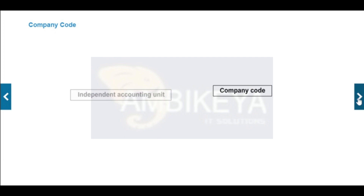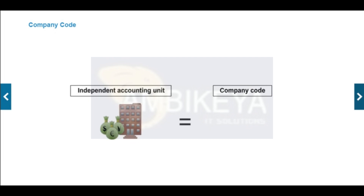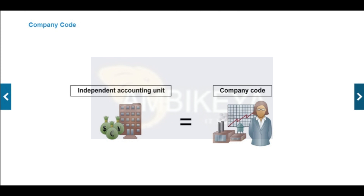A company code is an independent accounting entity — the smallest organizational element for which a complete, self-contained set of accounts can be drawn up. An example of a company code is a company within a corporate group. A company code has a unique four-character key, which can be alphanumeric.